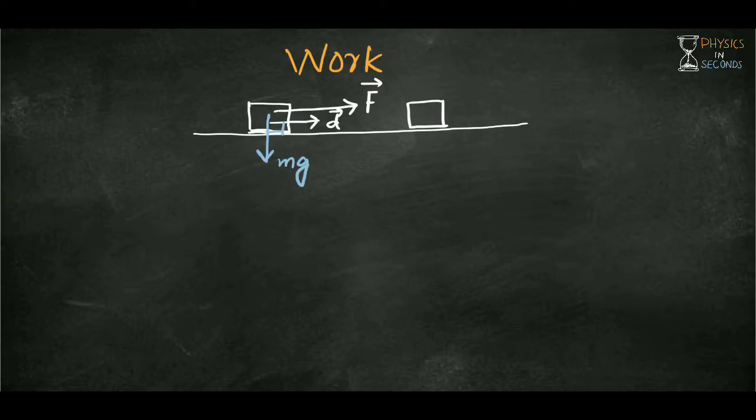Let's say the force is applied at angle theta with respect to displacement. When we resolve force into its rectangular components, there are two components: F cos theta and F sin theta. F cos theta is along displacement and it will produce work.